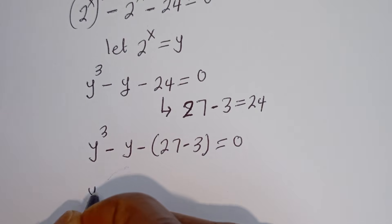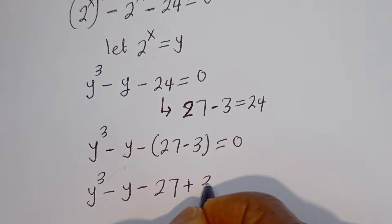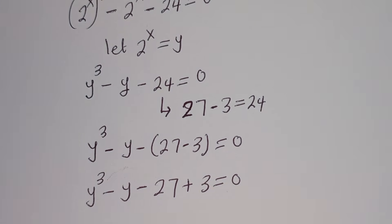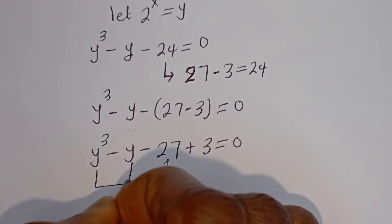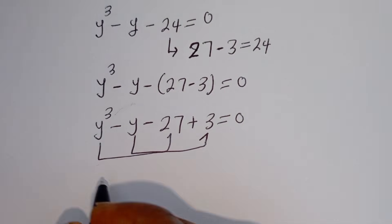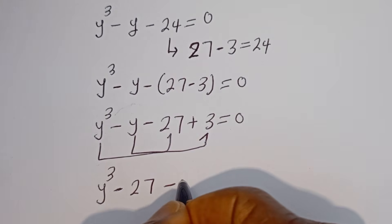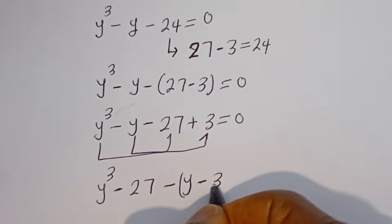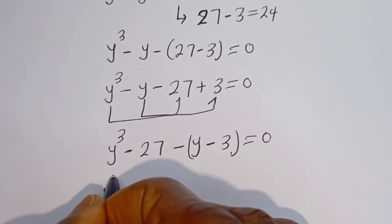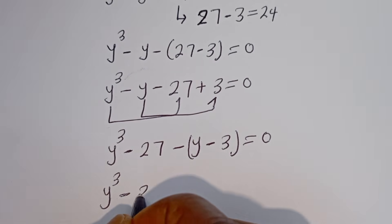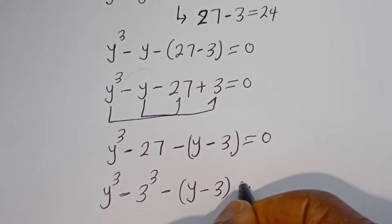Then, this is y to the power of 3 minus y minus 27 plus 3 is equal to 0. Now, let's compare: we have y to the power of 3 minus 27, then minus y minus 3, is equal to 0. So we have y to the power of 3 minus 27, then minus y minus 3, is equal to 0.